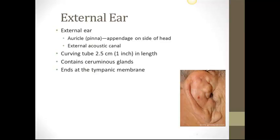The external ear consists of the auricle, or the pinna. We often refer to the pinna as the appendage on the side of the head — it is the cartilage part of the ear that we see. It is a curving tube, 2.5 cm or about 1 inch in length, and contains ceruminous glands. The external ear ends at the tympanic membrane, also known as the eardrum.